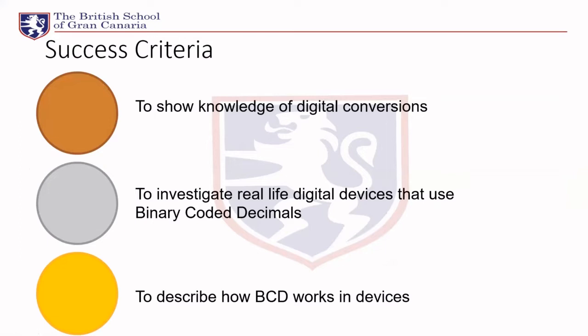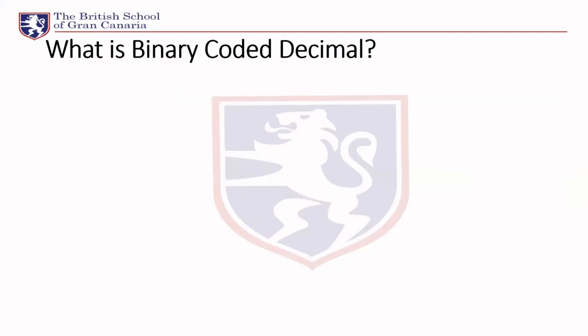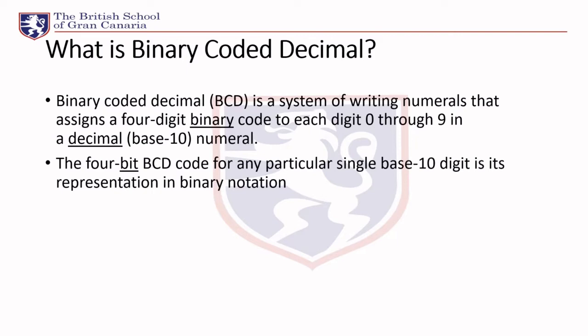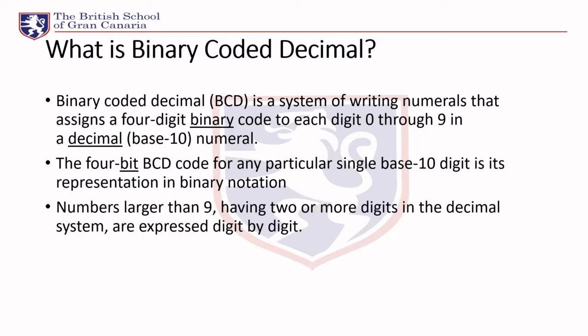Describe how it works in devices. So what is binary coded decimal? Binary coded decimal is a system of writing numerals that are assigned to a four-digit binary code. Each digit from zero through to nine has a decimal base of 10, and the four-bit binary code for any particular single base-10 digit is its representation in binary notation. Numbers larger than nine have two or more digits in the decimal system and are expressed digit by digit.